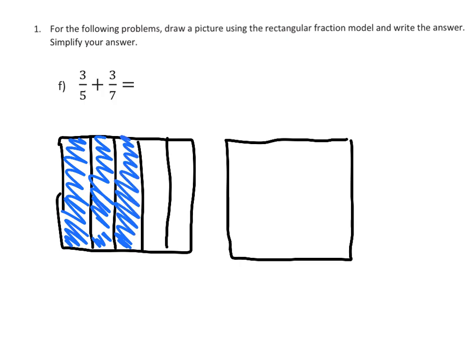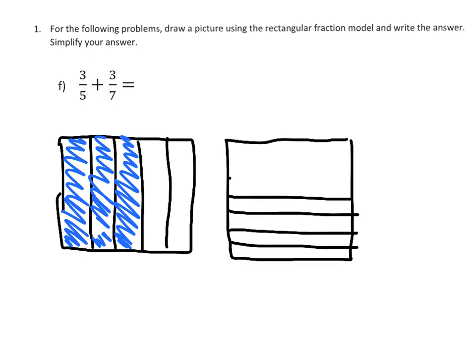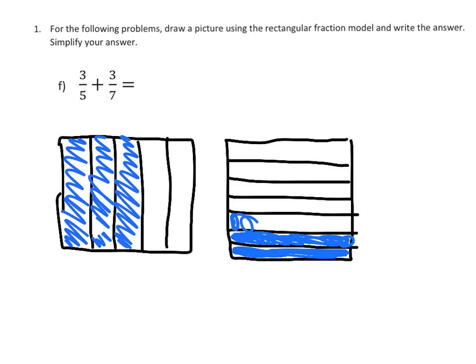There's our 3/5. Over here in this rectangle, we're going to cut it into 7 pieces because the denominator is 7 — 1, 2, 3, 4, 5, 6, 7 — and we're going to shade in 3 of those 7ths: 1/7, 2/7, and 3/7. So over here we have 3/5, and over here we have 3/7.